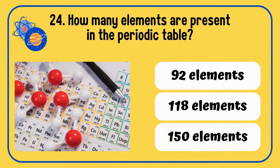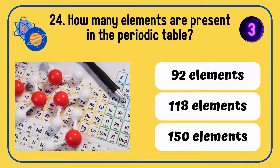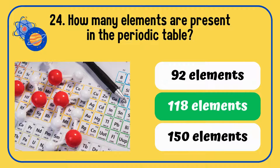How many elements are present in the periodic table — 92 elements, 118 elements, or 150 elements? There are 118 elements in the periodic table.